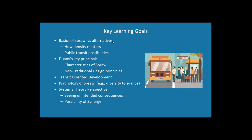Some learning goals: we'll talk about the basics of sprawl, why density matters, and the public transportation options that open up when you get more density. Duany has five key characteristics of sprawl and five key principles of neotraditional design. We'll talk about transit-oriented development, and we'll spend a little time on the psychology of sprawl — whether or not somebody rides a bus depends on who they see riding that bus, so you get issues of class and racism. And we'll connect to some systems theory principles, especially the idea of synergy.